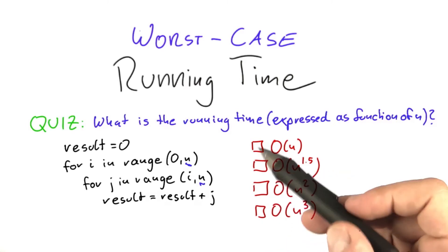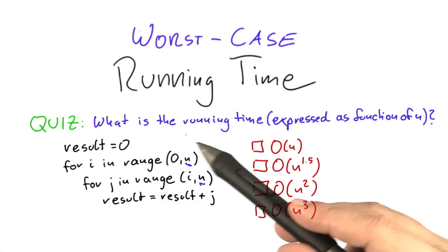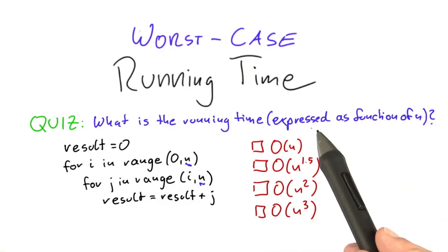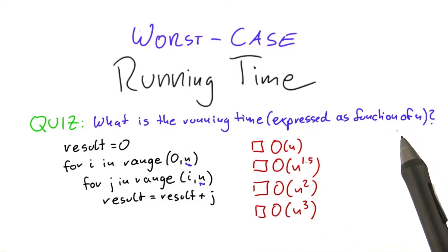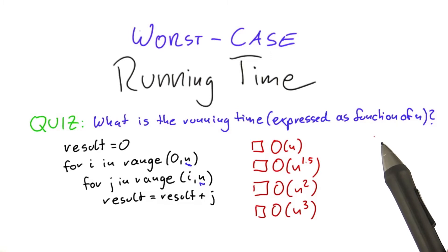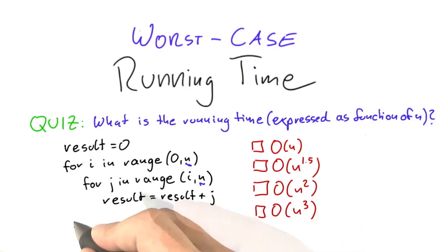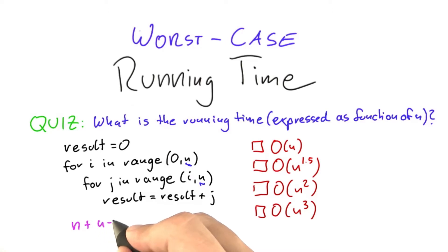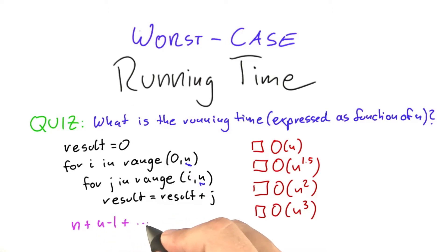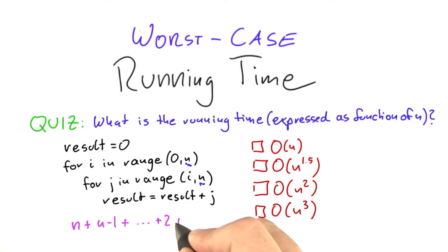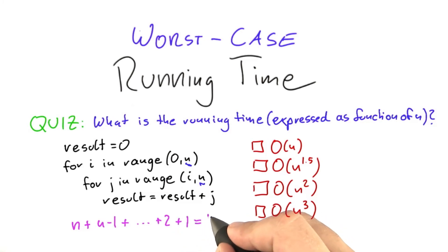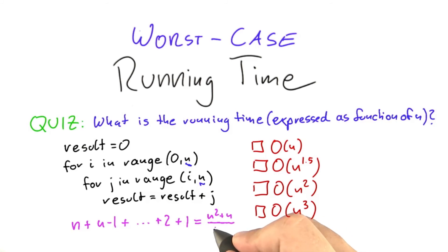Check the box that states the correct running time of this algorithm, expressed as a function of n. I'm also going to give you a little hint: if you add n plus n minus 1 plus n minus 2, and so on, plus 2 plus 1, that is equal to n squared plus n over 2.